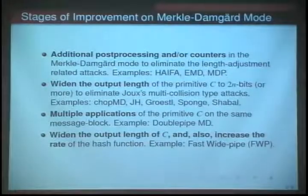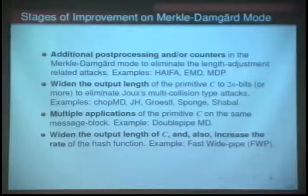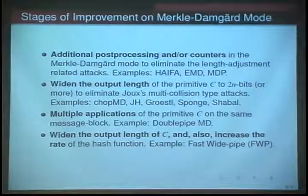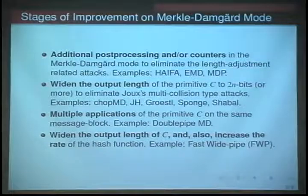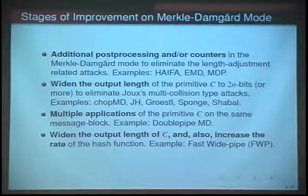The second stage of improvement is to have a larger state than the hash output. This is especially built to eliminate Joux multi-collision type attacks. We have many examples where the state size is larger than the hash output — Chop-MD and some of the SHA-3 finalists, including JH, Grøstl, and Sponge, all have state sizes larger than the hash output.